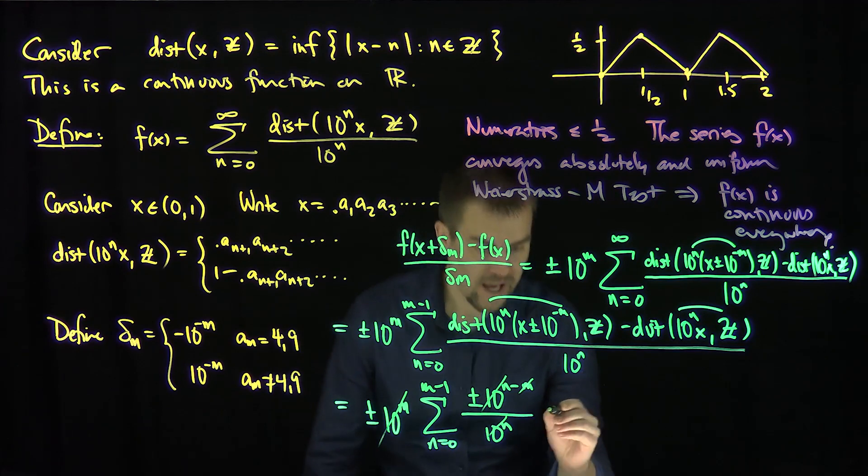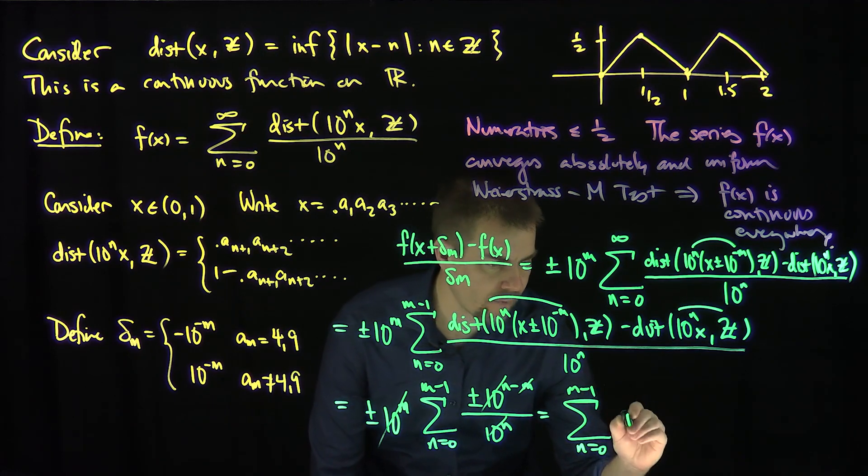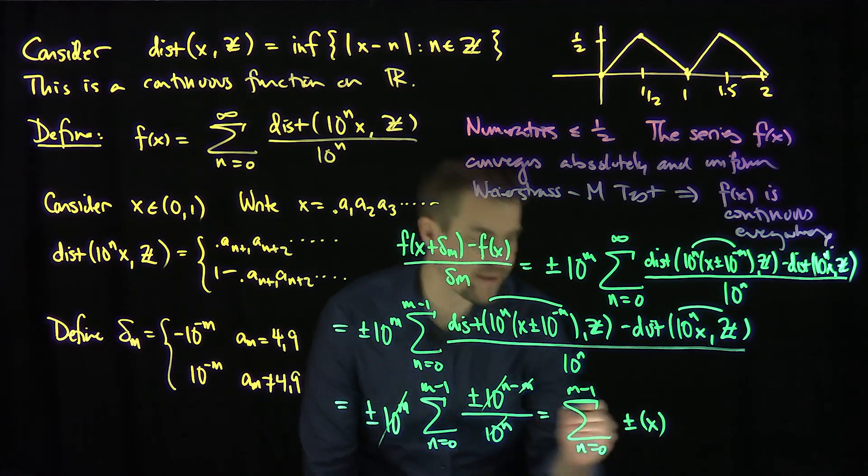And what we have over here is the 10^m's are going to cancel out, the 10^n's are going to cancel out. And what we have here is the sum, n goes from 0 up to m minus 1, of a whole bunch of plus and minuses which depend on x.